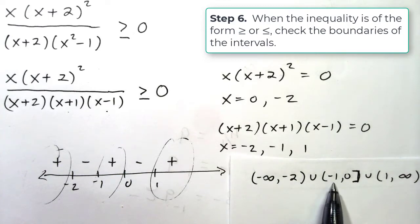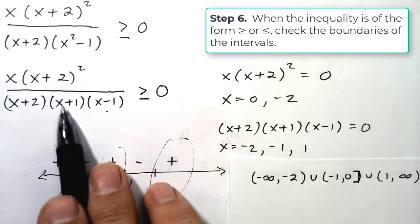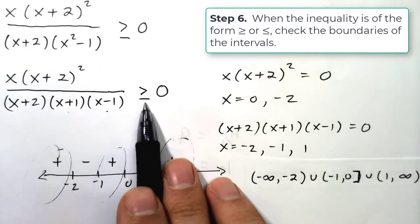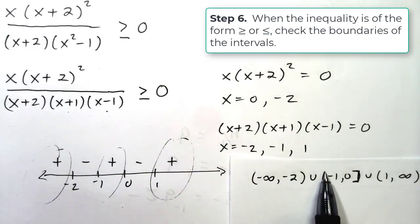What about the negative one? Same thing. Makes the denominator zero. So the whole thing is undefined. So this is not a true statement. So I don't include the negative one. I leave a round bracket.